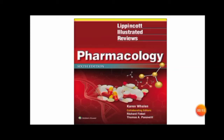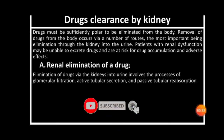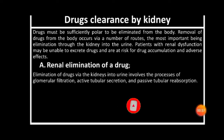Hi, this is Dr. Jin and today we will discuss another topic taken from this book on pharmacology and drug clearance. By kidney, a drug must be sufficiently polar to be eliminated from the body. Removal of drugs occurs through a number of routes, the most important being elimination through the kidney into the urine. Patients with renal dysfunction may be unable to excrete drugs, with risk of accumulation and adverse effects.